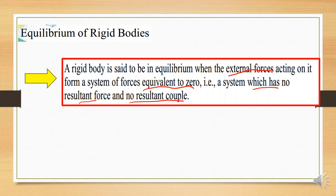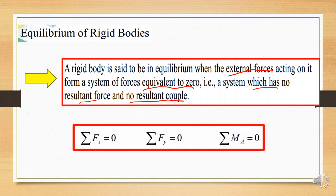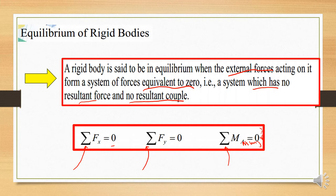In order to comply with this definition, these are the three equations which define the state of equilibrium for rigid bodies. The first is the summation of force in the x-direction equals zero. The second is the summation of force in the y-direction equals zero. And the third is the summation of the moment at any point equals zero. All external forces acting on the body must comply with these three conditions.